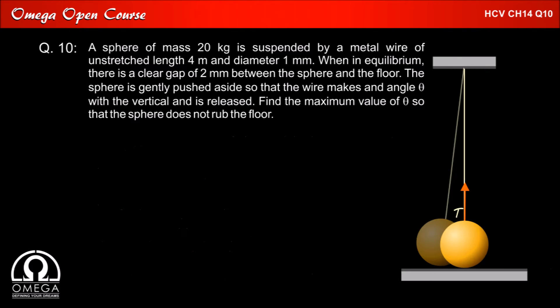Now let us move the sphere aside and let it come to the lowest point. When it passes through the lowest point it will have some speed. Let us look at the free body diagram of this sphere at that point. The forces acting on it are tension applied by the wire in upward direction, gravitational force mg in downward direction, and centrifugal force mv square by L in downward direction.